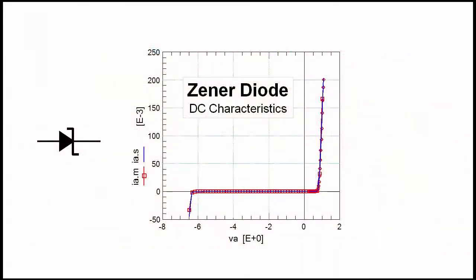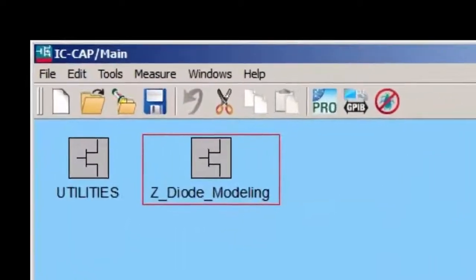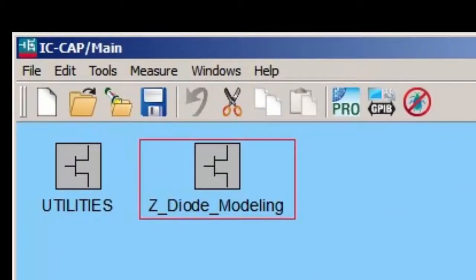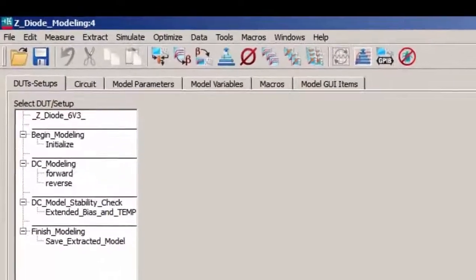Let me now demonstrate all this with a simple modeling example, the modeling of a Zener diode in the DC forward and in the reverse range. I load the model file ZDiodeModeling, which is also included in the download material. Shown on the left side of the window is the structure of the modeling flow.